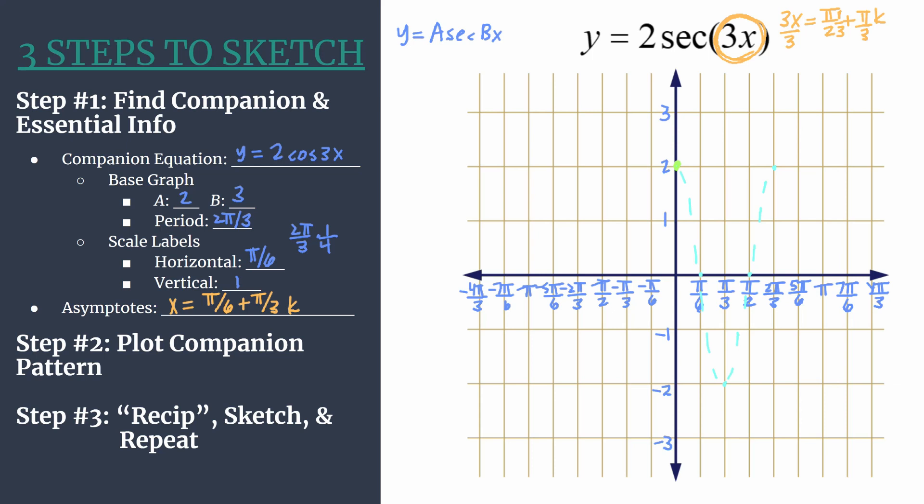We know that the original x-intercept should be a vertical asymptote. We know that the companion pattern's minimum should turn into a relative maximum. We have another x-intercept, so another vertical asymptote. Notice these asymptotes are at π over 6 and π over 2, and we predicted those using our equation. At 2π over 3, we have another local minimum. Let's sketch in and we can see our secant graph.